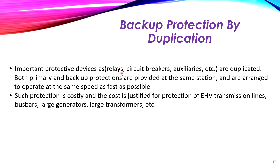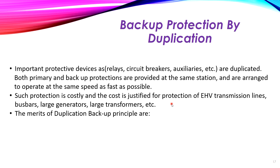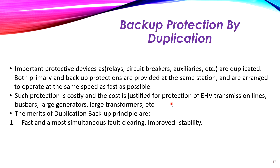This type is used for very important components such as extra high voltage transmission lines, large generators, bus bars, and large transformers. The merit of the duplication backup principle is number one: it is fast and almost simultaneous fault clearing, which improves stability of the power system. Number two: complete reliability can be assured because all protection components are duplicated. The disadvantage is of course the large cost of this system.